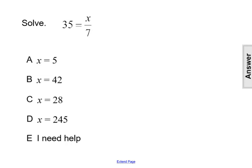Solve the equation 35 equals x divided by 7. When asked to solve an equation, the goal is to isolate the variable or get the variable completely by itself on one side of the equal sign.